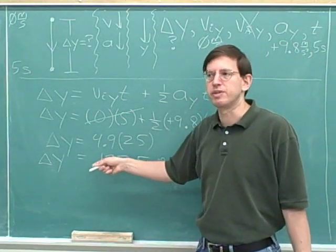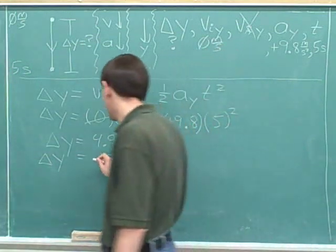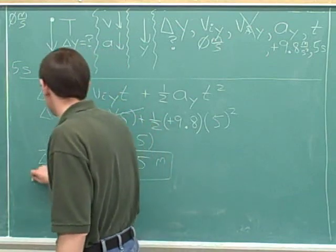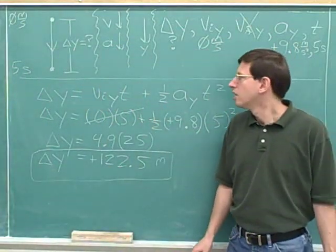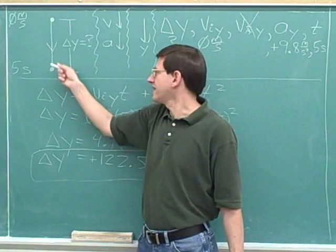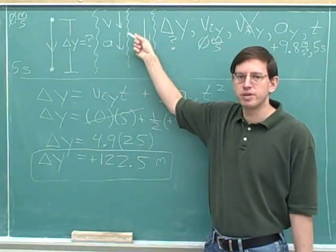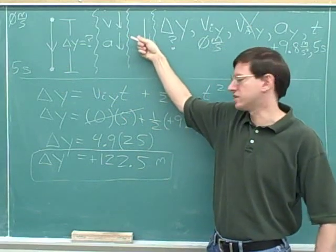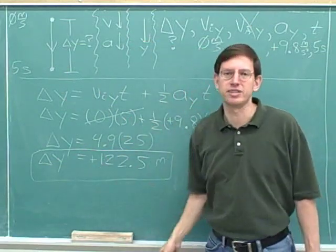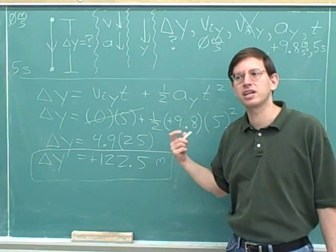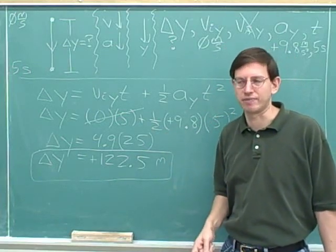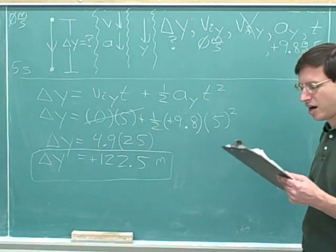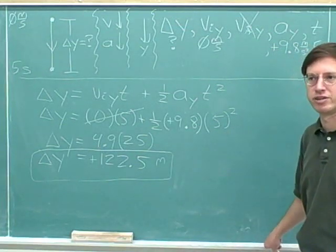Well, mathematically, this number came out to be positive. So we should indicate that explicitly with a positive sign. And we should also think about whether that makes sense. Did we expect the displacement to come out positive? Well, we're moving downwards and we chose downwards to be the positive direction. Since we're moving downwards and we chose downwards to be the positive direction, the displacement really better come out to be positive. If the displacement had come out to be negative, we would have known we made a mistake. And we'd have to go back and find our mistake.